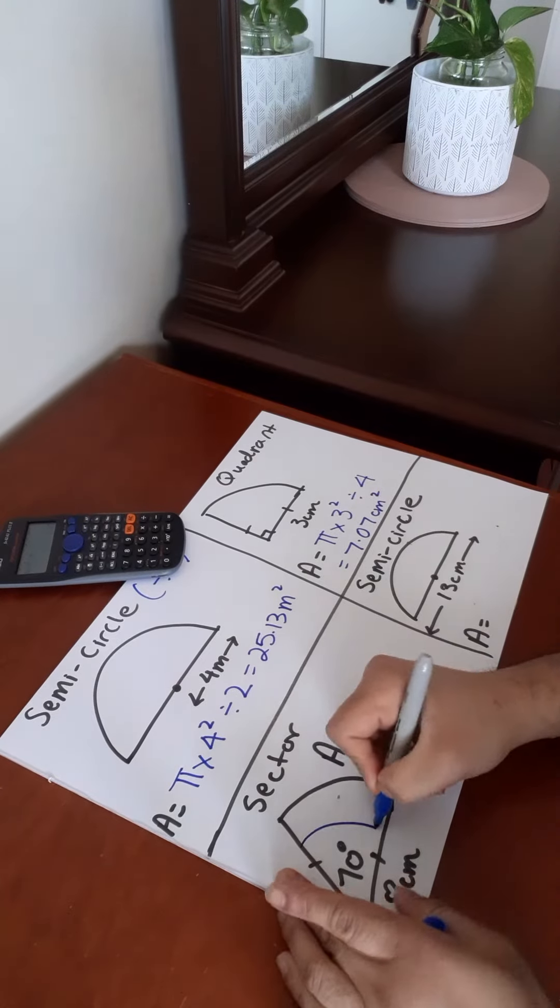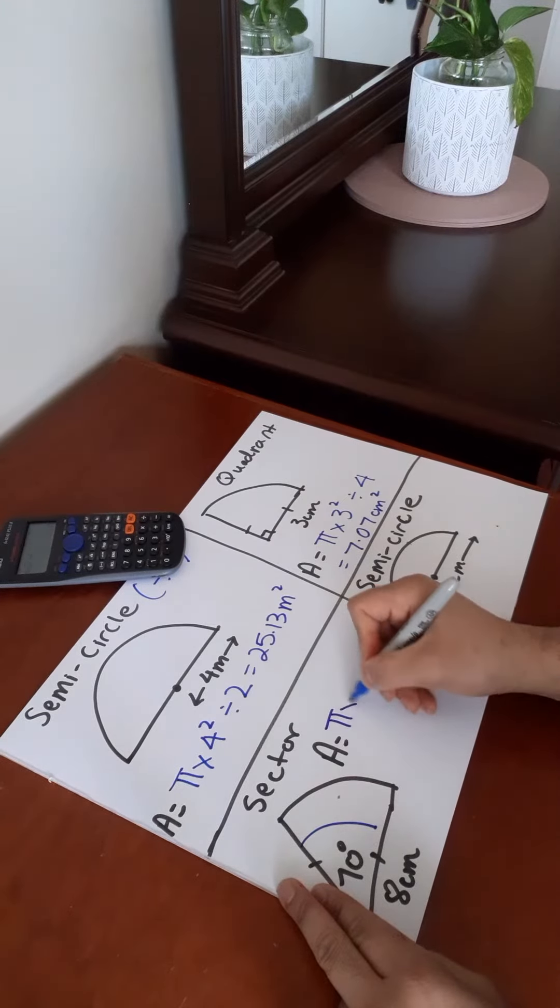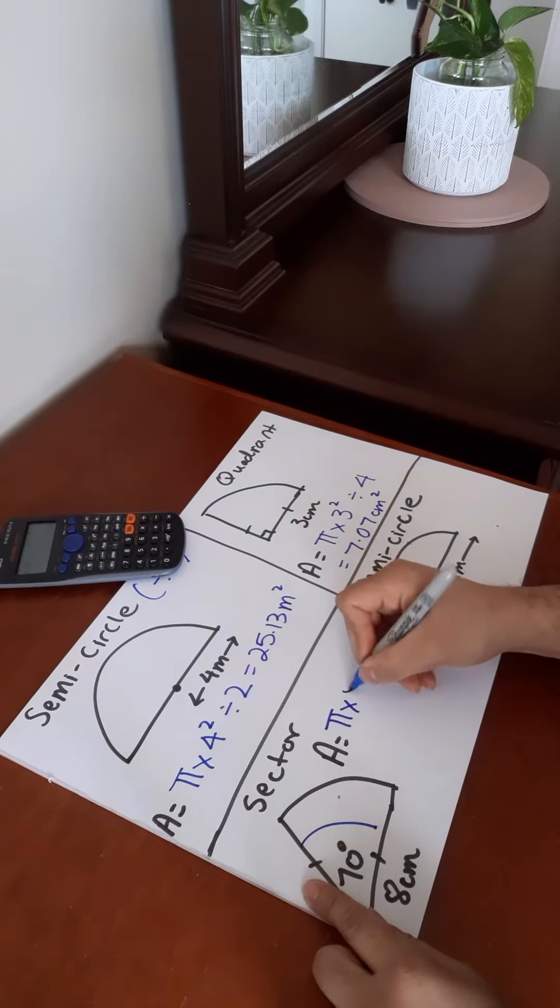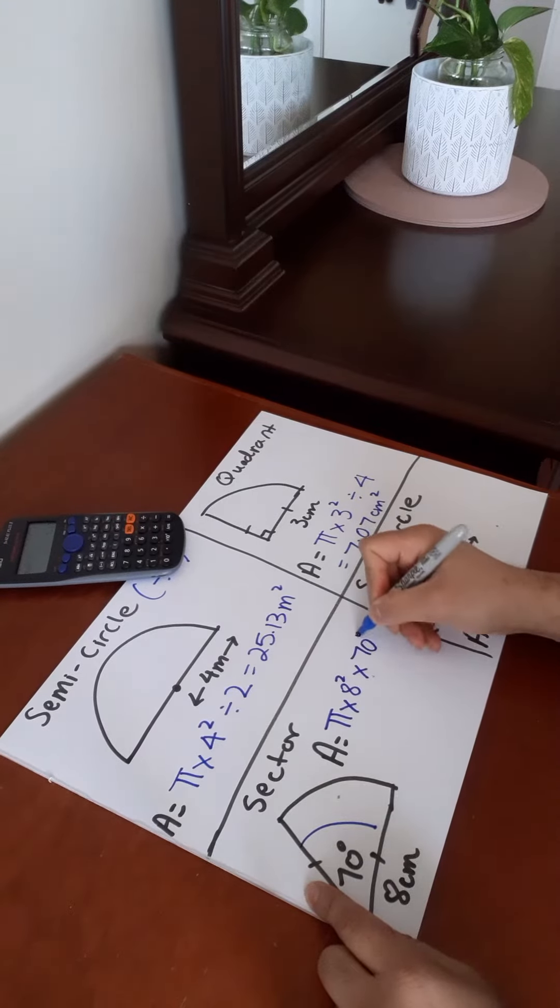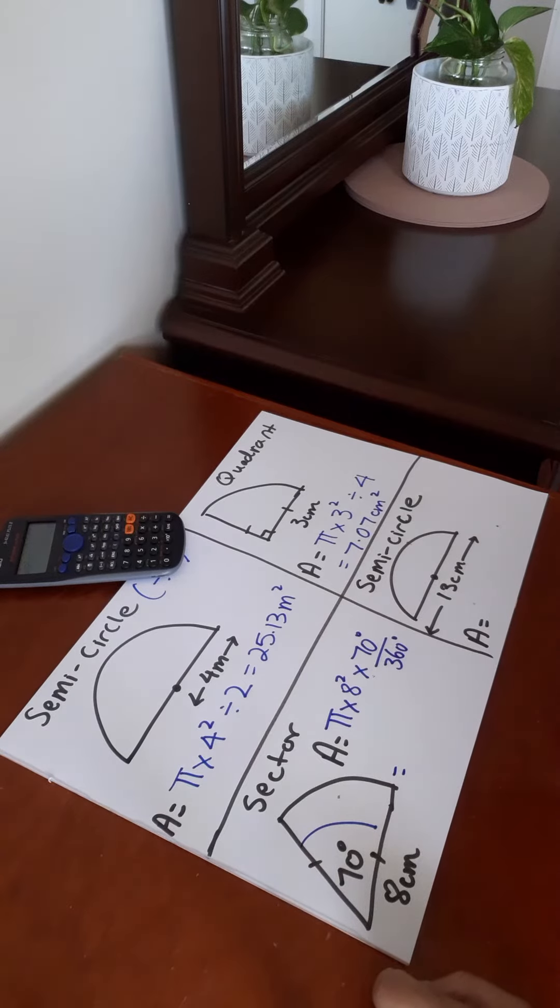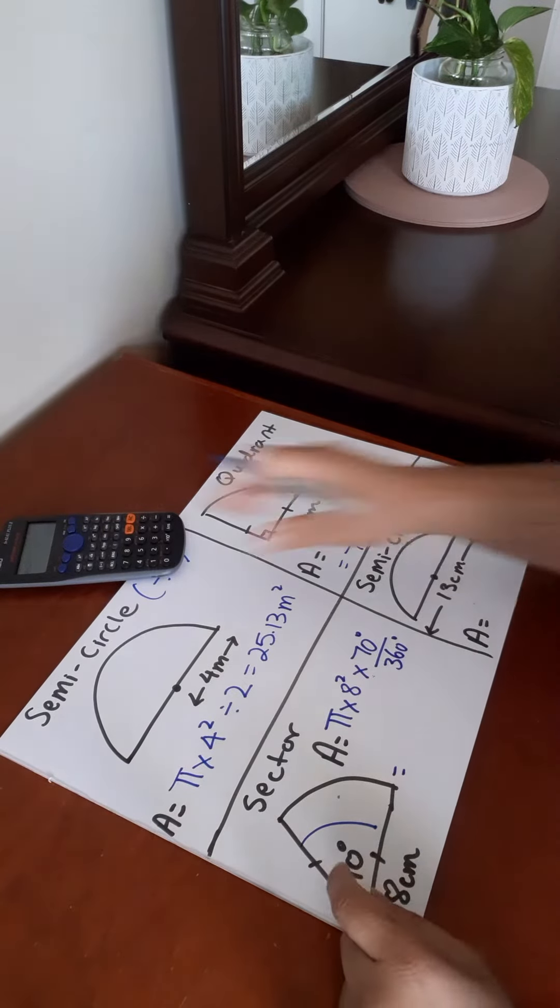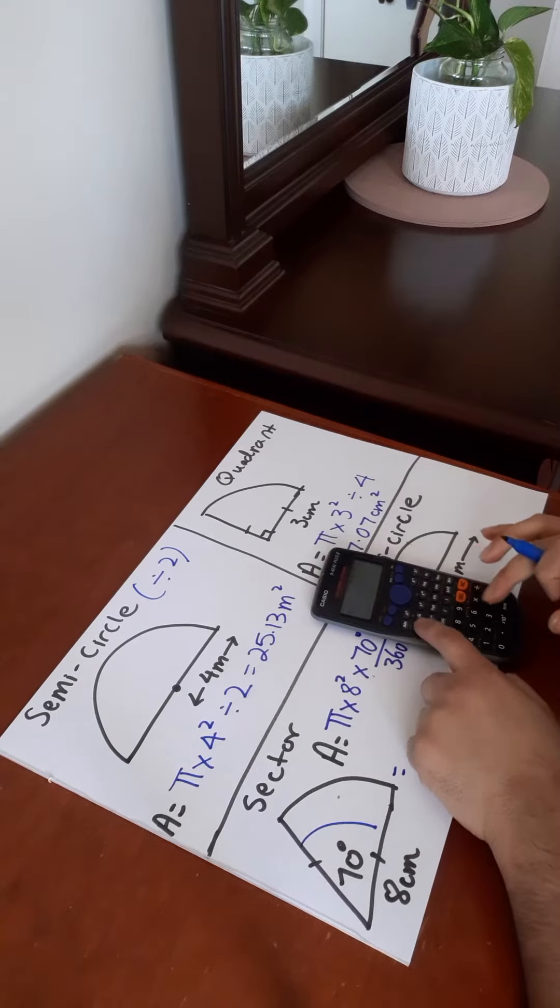So in this case, we've got 70 degrees out of a whole circle, which is 360 degrees. So pi times the radius is 8, 8 squared times 70 degrees over 360 degrees because we have 70 over 360th of a circle. So pi times 8 squared times 70 over 360.